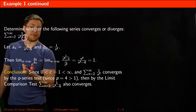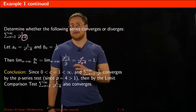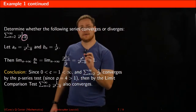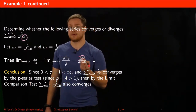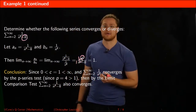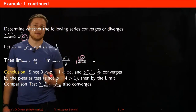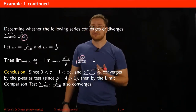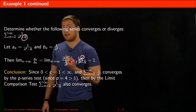Setting up the limit as n goes to infinity of aₙ divided by bₙ: dividing by a fraction is the same as multiplying by its reciprocal. The degree in the numerator equals the degree in the denominator, so the limit is just the ratio of the leading coefficients — 1 divided by 1, which equals 1. Since 1 is sandwiched between 0 and infinity, and the series 1 divided by n⁴ converges by the p-series test, the limit comparison test tells us that 1 divided by n⁴ minus 8 also converges.